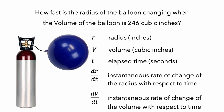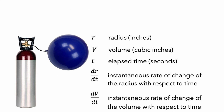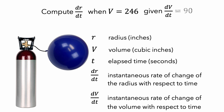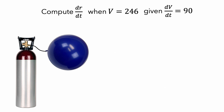Using this notation, our goal is to compute dr/dt when v is equal to 246 cubic inches, given that dv/dt is equal to 90 cubic inches per second. Since the balloon is a sphere, we can define a formula that relates the volume of the balloon and the length of its radius. This formula is v equals four-thirds pi r cubed.